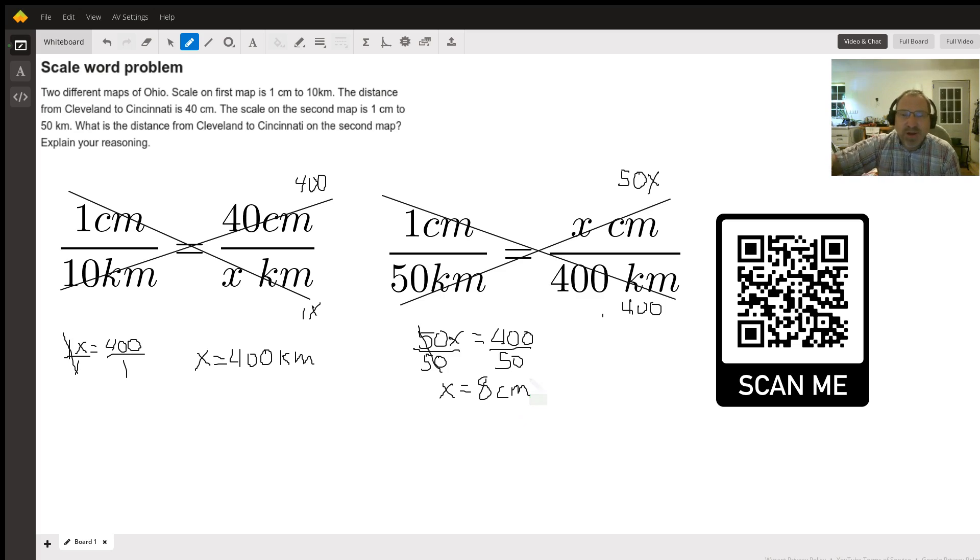Now before we call this problem finished, let's think about why that would be. On the first map it was 1 centimeter to 10 kilometers. On the second one it's 1 centimeter to 50 kilometers. That means this one has a scale that is 5 times greater, so we've got to reduce this by one-fifth. What is 40 divided by 5? 8. Absolutely. So not only does our problem make sense, but it works out.